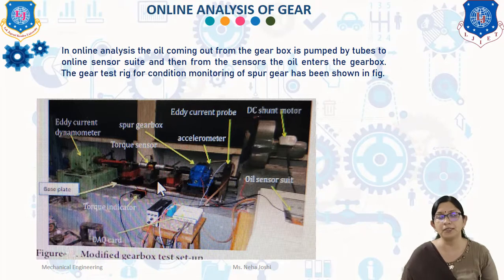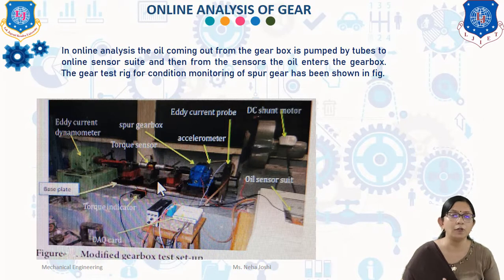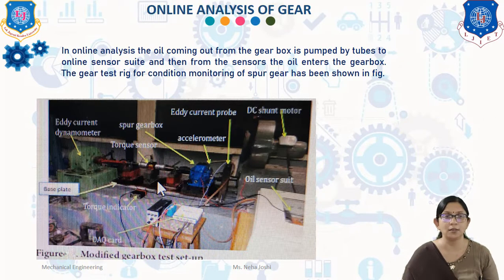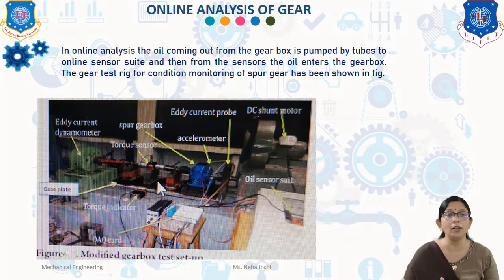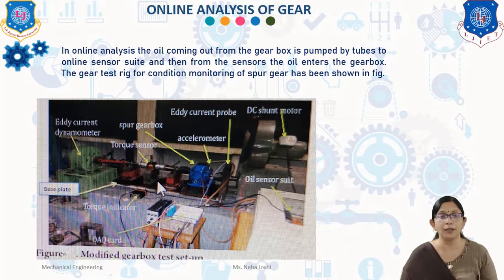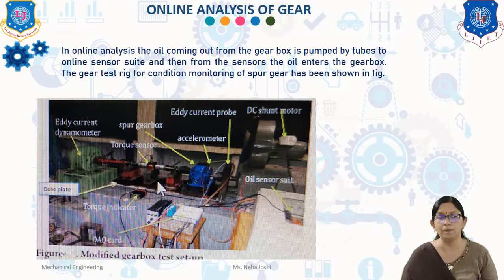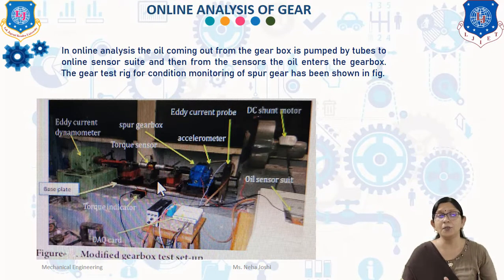Material removed from the contacting surface contaminates the lubricant and deteriorates oil quality; hence lubricant analysis is a core indicator of gear faults. In online analysis, the oil coming out from the gearbox is pumped through tubes to online sensors, and then from the sensors the oil enters the gearbox. Online analysis sensors generally include oil condition sensors, moisture sensors, and total ferrous wear debris sensors. The total ferrous wear debris sensor measures ferrous concentration in ppm present in the oil sample. Ferrous debris is expressed in parts per million by weight; as wear increases, ferrous concentration also increases, giving an indication of gear faults.